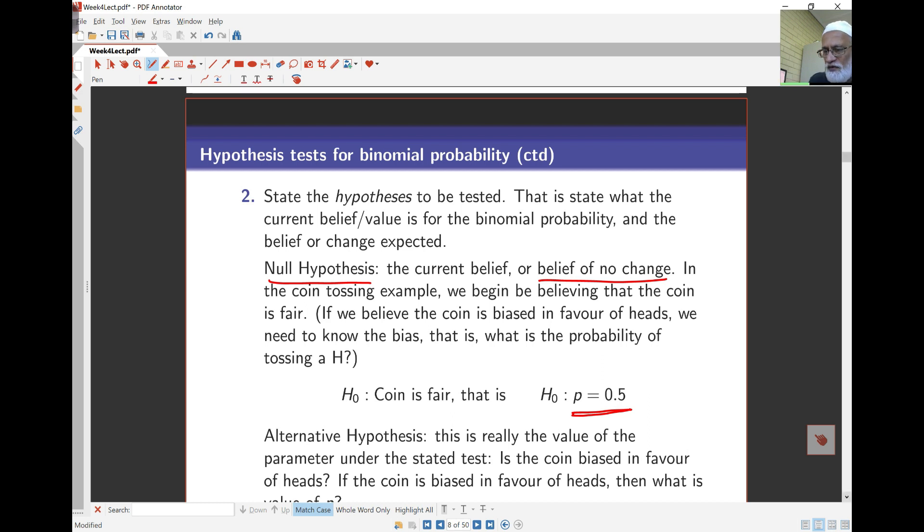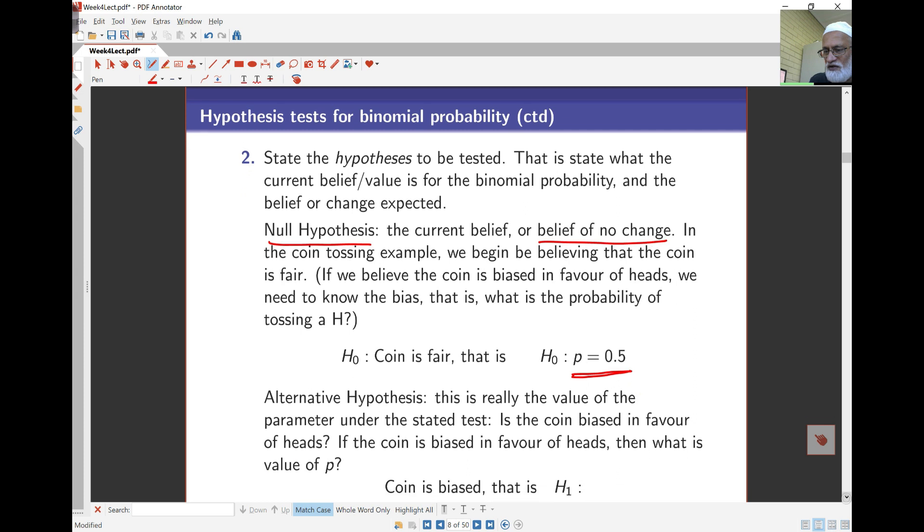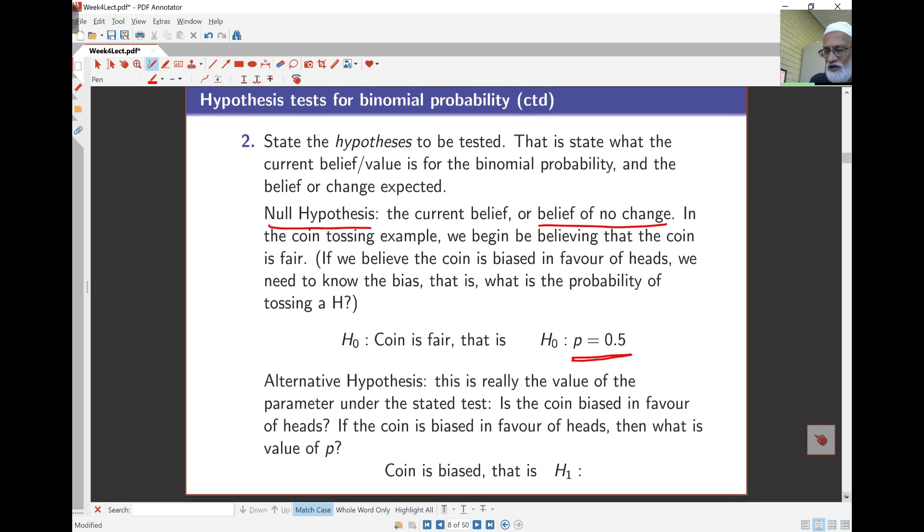Now the alternative hypothesis actually is what I am actually trying to test for. I am trying to test if the coin is unfair or biased towards heads. If the coin is biased towards heads, then what should the value of P be? Well, if it is biased towards heads, the probability of heads is going to be bigger than 0.5. That's how this works. So I start off by stating the null situation which is one of no change, P is 0.5, the coin is fair. And then I look at the alternative hypothesis. This is my suspicion that the coin is unfair and biased towards heads. So P is bigger than 0.5.